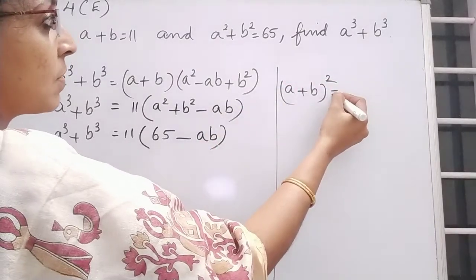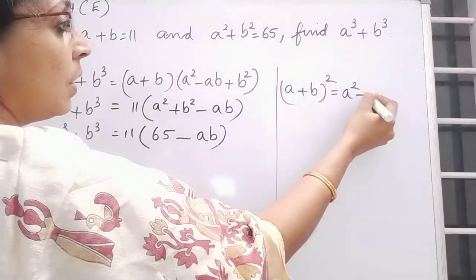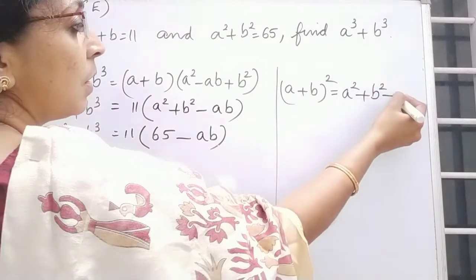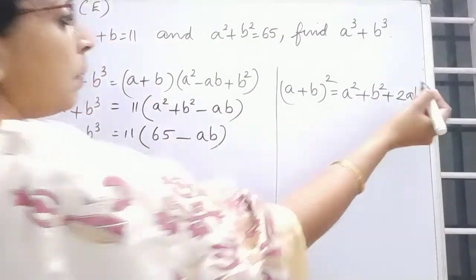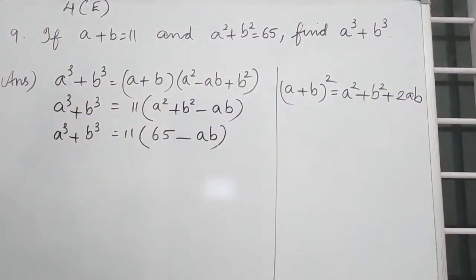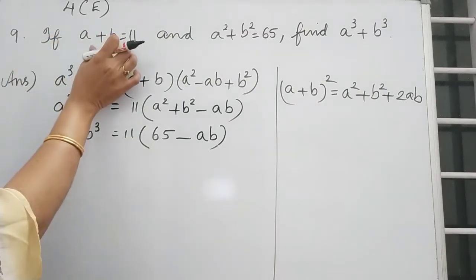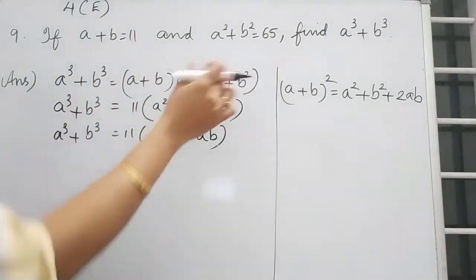A plus B whole square is equal to A square plus B square plus 2AB. Why we are taking A plus B whole square without taking A minus B whole square? Since we have A plus B is equal to 11, so we can take that A plus B whole square.